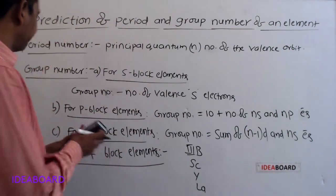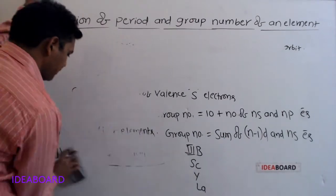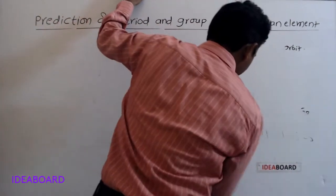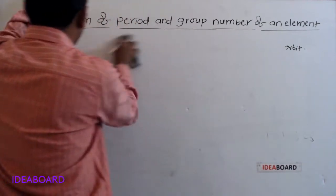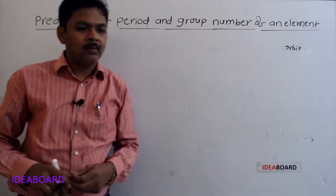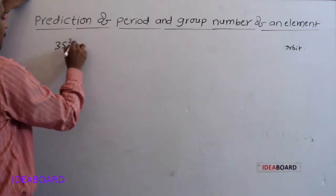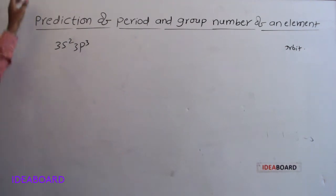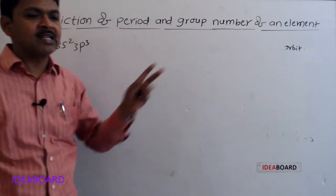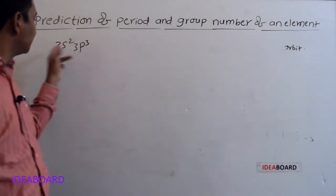I will give some examples. For the element with valence electronic configuration 3s²3p³, what is its position in the periodic table?